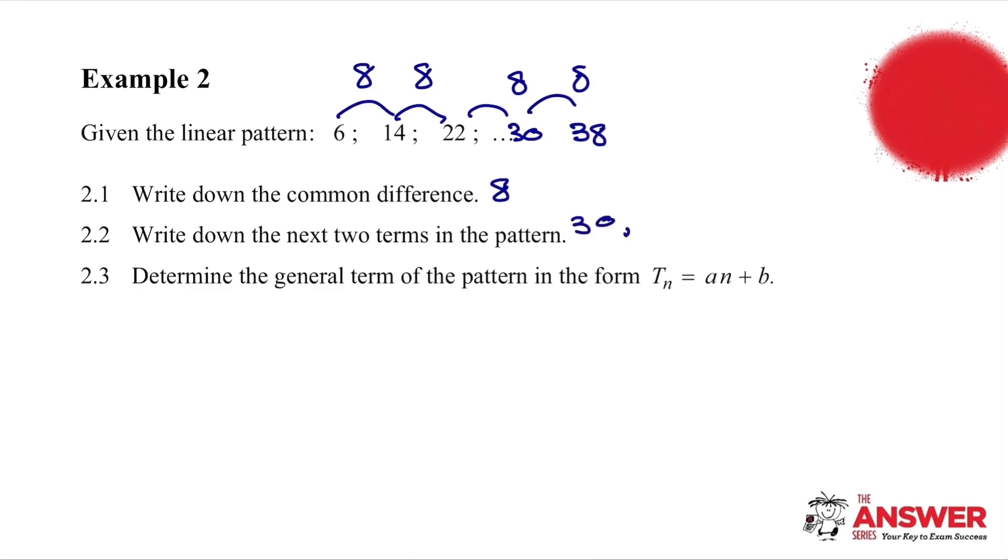Now we need to generate the formula for this. So we're going to do it by inspection. Tn equals eight, because that's the common difference. So the coefficient of n is always the common difference. Now we just need to work out by inspection what the b value is. So if we substitute the position value, so when we substitute one, we know the answer is six. So six is equal to eight plus b, and therefore b equals minus two.